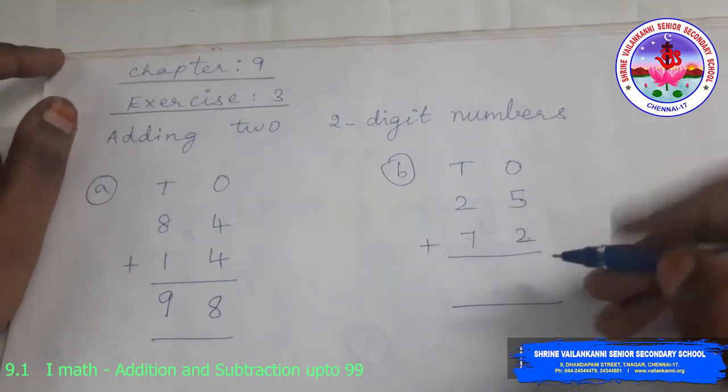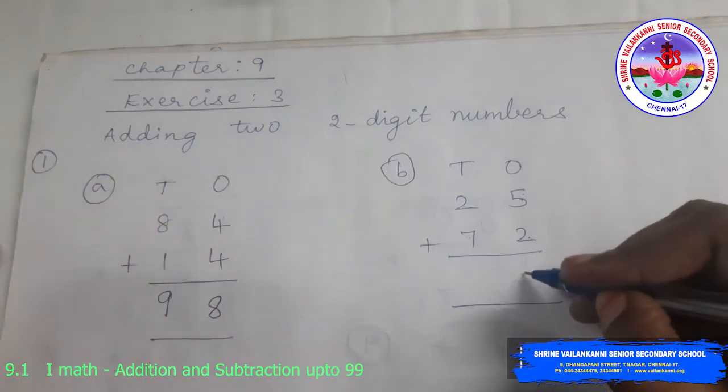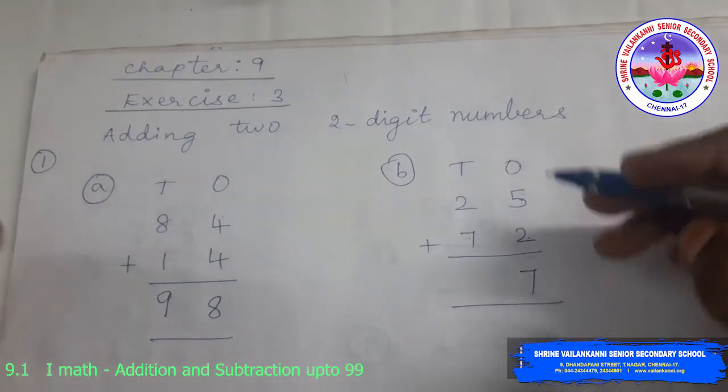And first step is you have to add the 1s digits first. So 5 1s plus 2 1s is 5 in the mind, 2 in the finger. After 5, 6, 7. So you get 7 1s.